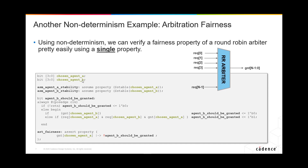We have chosen agent a and chosen agent b. Because it's non-deterministic, we're not specifying exactly which agent it should be - which index in this rec vector - we're allowing the tool to choose for us. The stability constraints make sure they're non-deterministic constants, so the tool can choose any value for agent a and any value for agent b, but it must be stable. There's also a flag that says agent b should be granted.